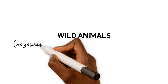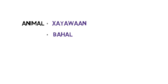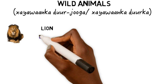Welcome to another video. Today we are going to be talking about wild animals in Somali — Hayawanka Durjoga or Hayawanka Durka. An animal can be called Hayawan, Bahal, or Tugad.